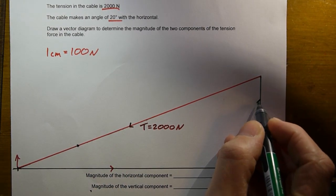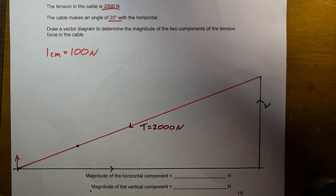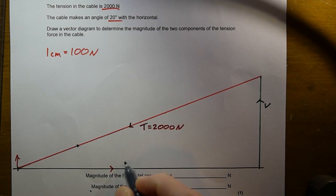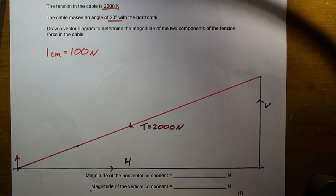And that green line there represents the vertical component of my force, and that black line, the length of the black line, can represent the horizontal component of the force.